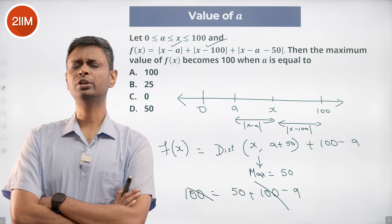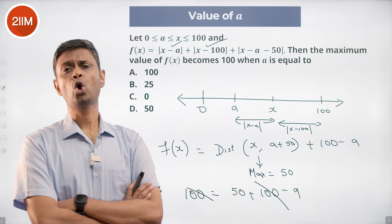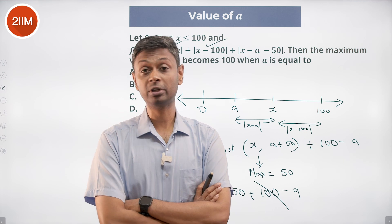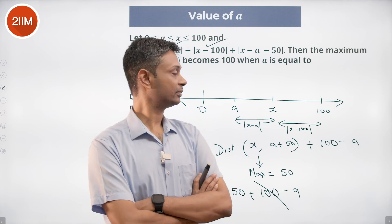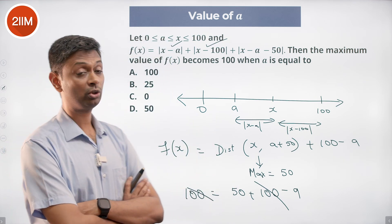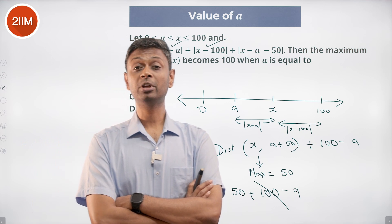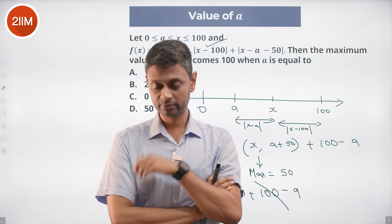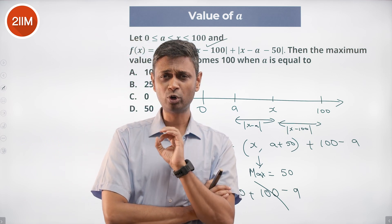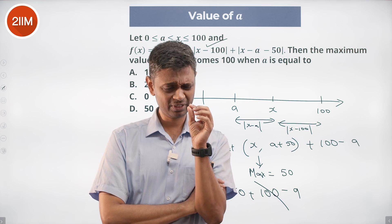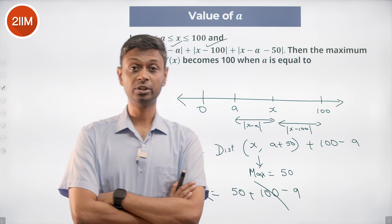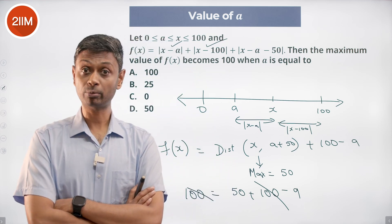Absolutely delightful question — super difficult and tough. To reframe this: modulus of (p minus q) is the distance between p and q on the number line. That's the key insight we grab onto, and with that, a bunch of these questions become that little bit more doable.